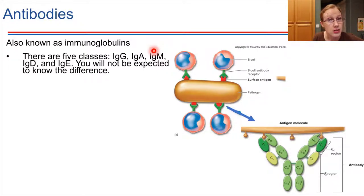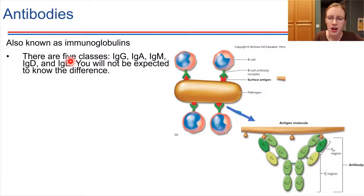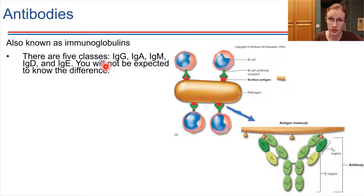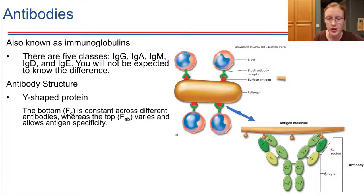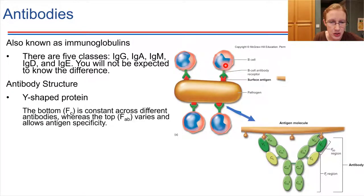I'm not going to be testing you on the differences between these types — that's something you could look up or learn in more detail in sub-biology or immunology classes. But there are a variety of different types of antibodies, and they're very specific. What they all have in common is a characteristic Y-shaped structure. Usually when they're depicted in figures, they're shown as a little Y-shape. In these pictures, the green thing is the antibody.